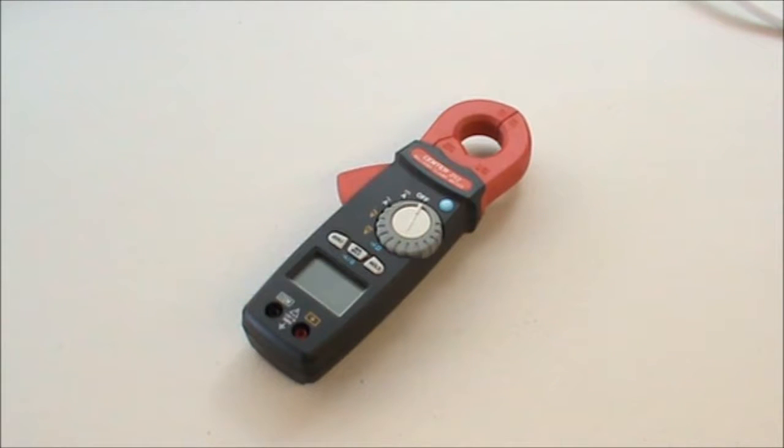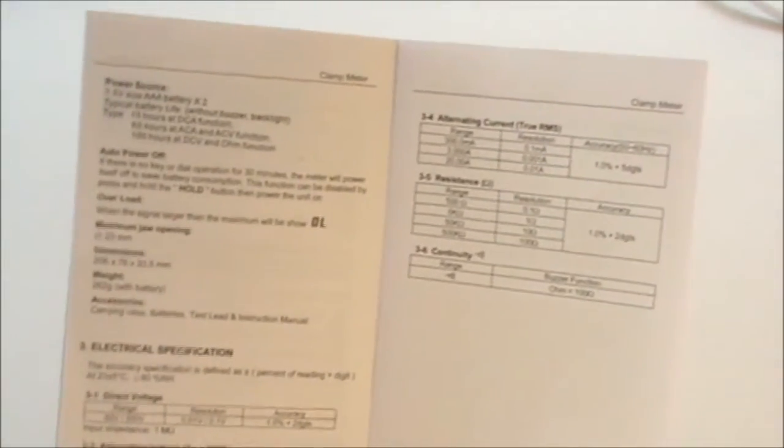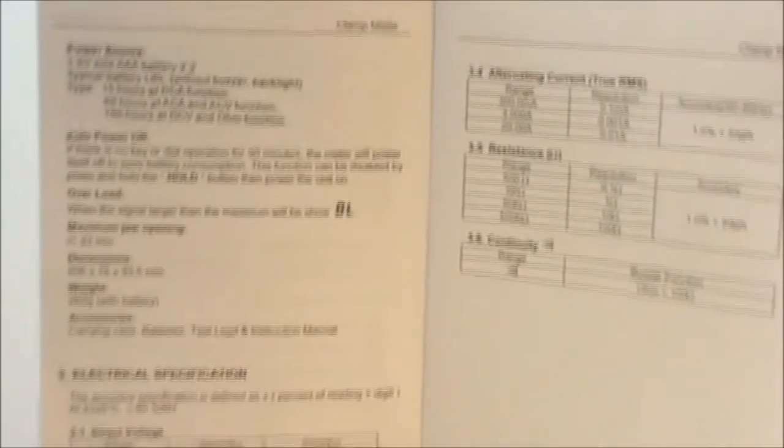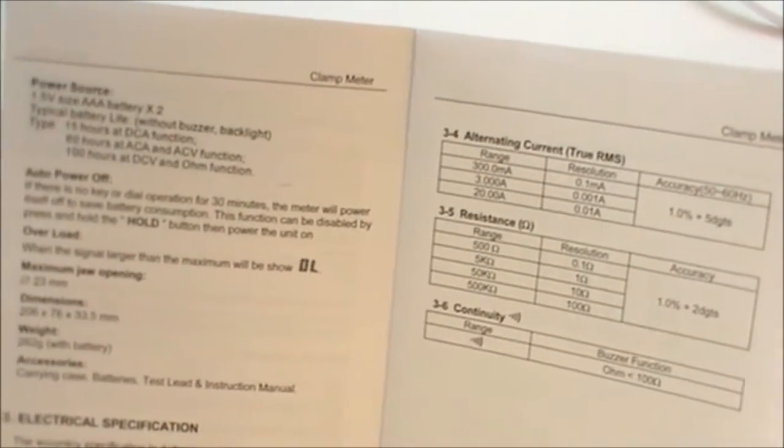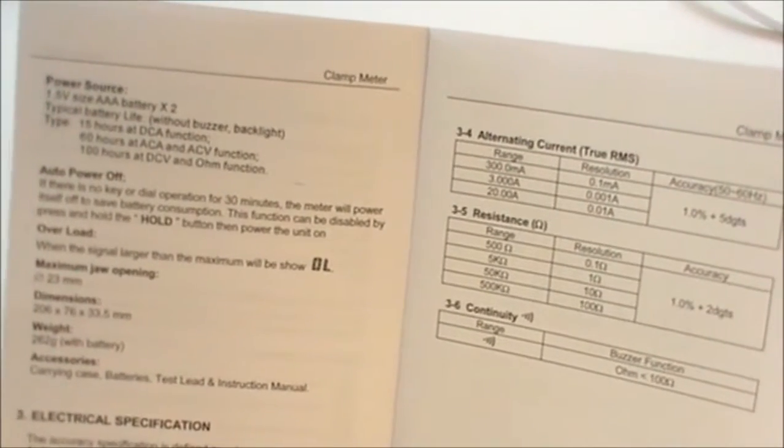The Center 262 milliamp clamp meter. Let's take a quick run through the specifications on the device. Looking here in the books, probably some of the key aspects. Jaw opening maximum 23 millimeters.